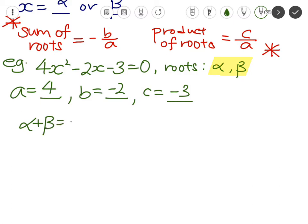so putting in the values, it will be negative, negative 2 over 4. We know that double negative gives you a positive, and 2 over 4 just gives you half, and that's your answer for alpha plus beta.